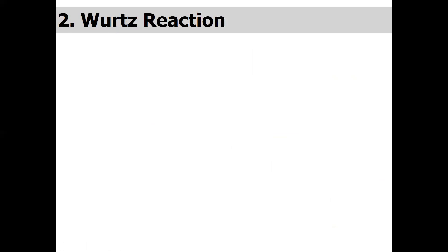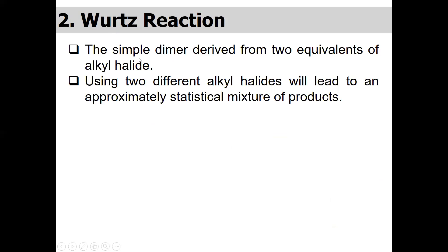The second reaction is the Wurtz reaction. It is a very old method to synthesize alkane. This reaction occurs in the presence of an alkyl halide upon treatment with an alkali metal, generally sodium. It is a type of radical reaction. If we use the same alkyl halide we will have a dimer from two equivalents of alkyl halide, and if we use two different alkyl halides it will lead to an approximately statistical mixture of products.